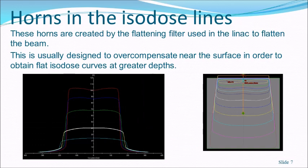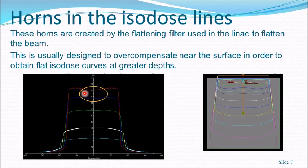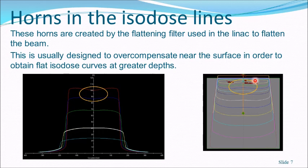When discussing beam profiles, the dose is maximum at the central axis and decreases off-axis, with the exception of horns in linear accelerators. These horns are created by the flattening filter, which is designed to overcompensate near the surface in order to obtain flat isodose curves at greater depth. At the surface, this means the central axis dose is less than the off-axis dose, creating the horns. At greater depth, the beam becomes nearly flat.